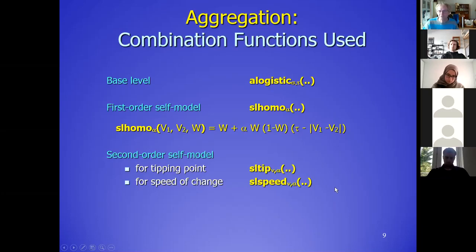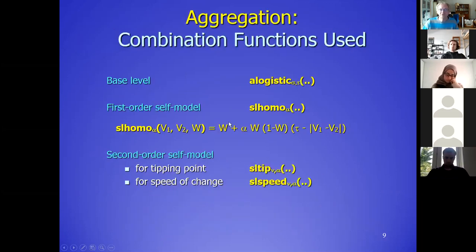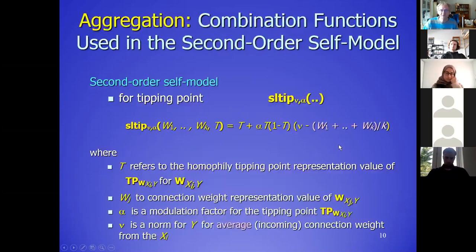For the second-order self-model there are two new functions — I will show them and give a bit of explanation. This one is noted 'ssl_homo,' which stands for simple linear. They are also quadratic forms in the library. This one stands for simple linear, and also here we have a simple linear form for the tipping point.